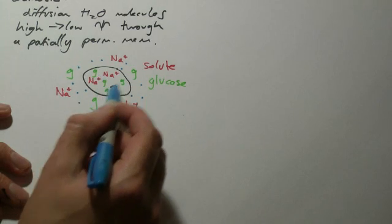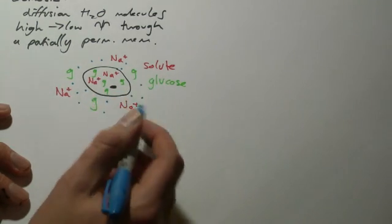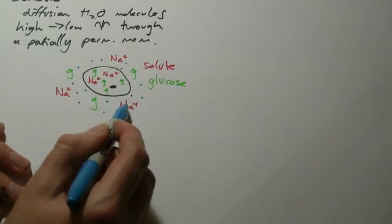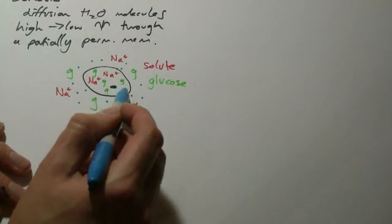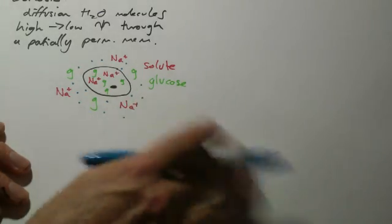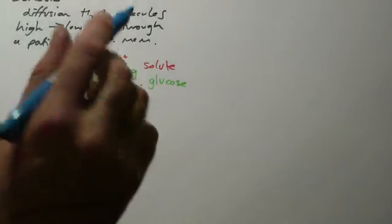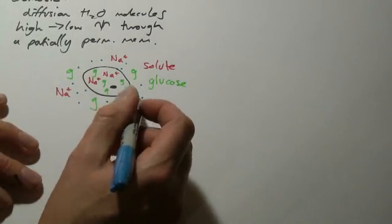In this situation I've got more glucose inside than outside, so I might expect glucose to be diffusing in. In this case I've got a bit more sodium on the outside than the inside as well, so I might expect sodium to be diffusing in. Usually the diffusion bit's okay.